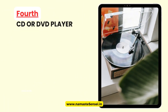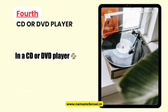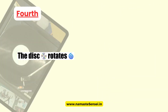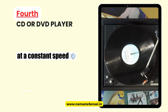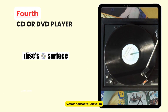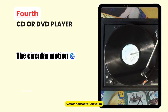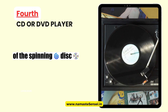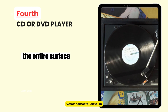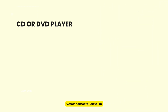Fourth, CD or DVD Player. In a CD or DVD player, the disc is inserted and spins inside the player. The disc rotates at a constant speed, enabling the laser to read the data encoded on the disc's surface. The circular motion of the spinning disc ensures that the laser scans the entire surface of the disc accurately.